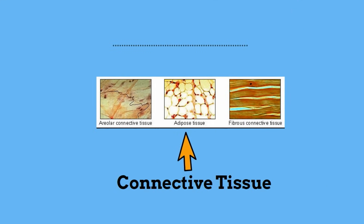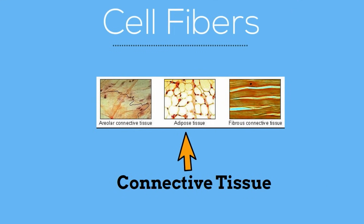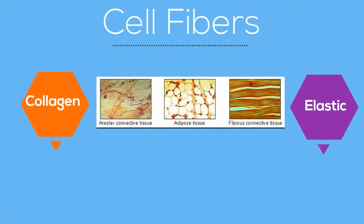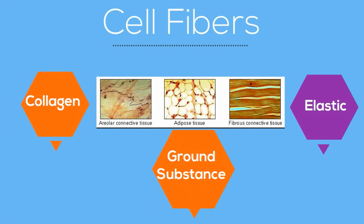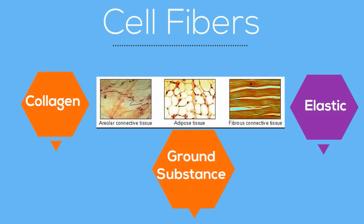Connective tissue is unique in that it consists of cell fibers. These fibers include collagen fibers, which are tough fibers, and elastic fibers. In addition, the cells are separated by a ground substance which is made up of water, fluid, and a mix of proteins called matrix.